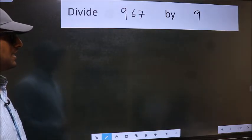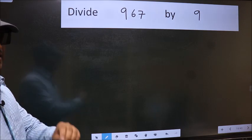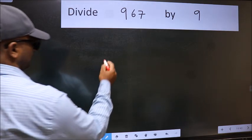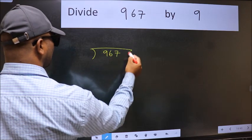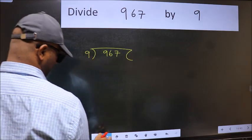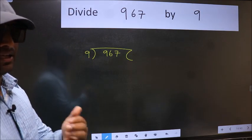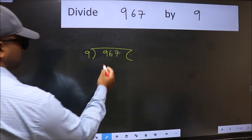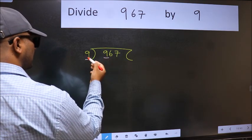Divide 967 by 9. To do this division, we should frame it in this way: 967 here and 9 here. This is your step one. Next, here we have nine and here nine. When do we get nine in nine table?